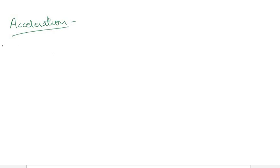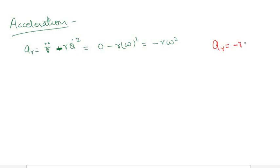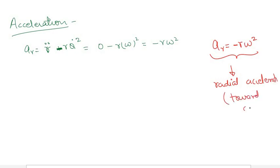Now let us find the acceleration for circular motion. The radial component of acceleration is a_r equals r-double-dot minus r times theta-dot squared. Since r is constant, r-double-dot equals zero, so a_r equals minus r times omega squared. This is called the radial acceleration and its direction is towards the center of the circle.